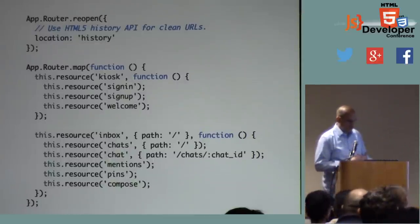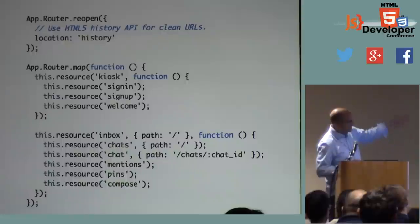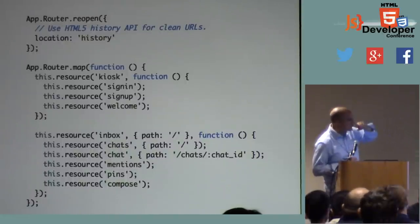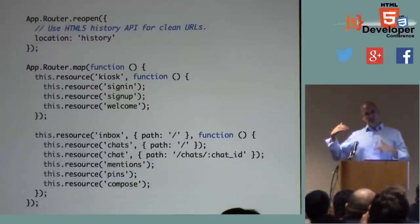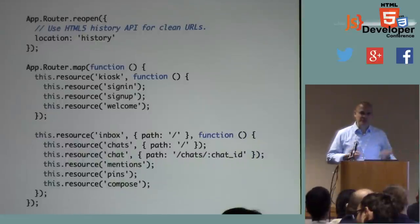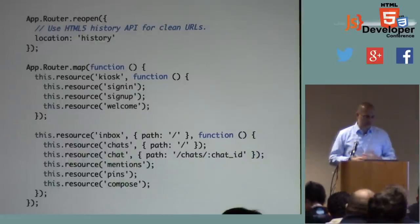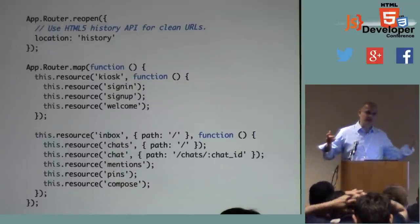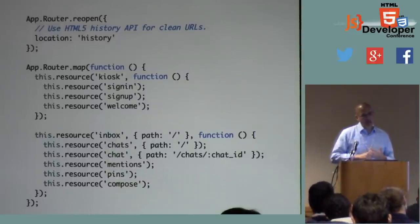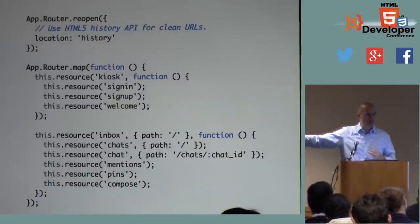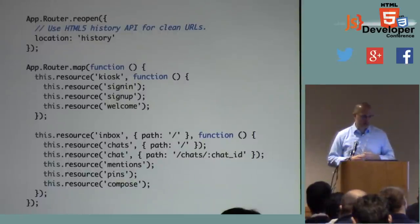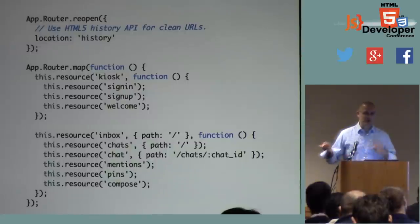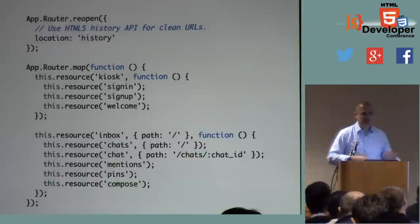One cool thing about Ember's router: changing between using hash or HTML5 history is actually really easy. In the first block, I just say app.router uses HTML5 history instead of the default hash. Just like that, I've gone from hash-based URLs to HTML5 history URLs. You'll probably need to change some server config to make sure you're always serving your Ember app and not getting a 404 at nested paths.